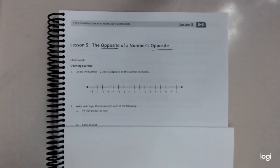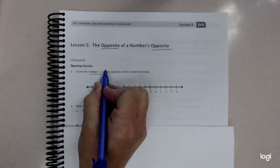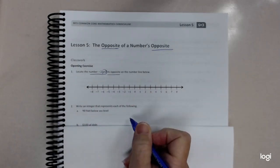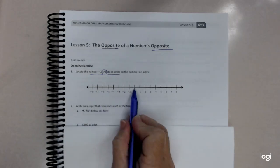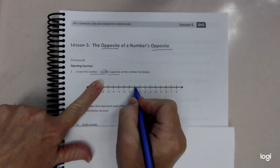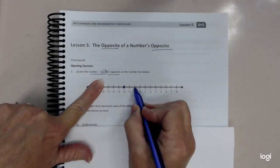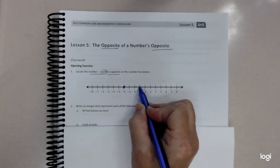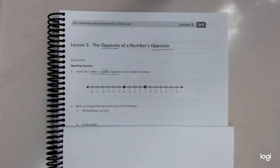Let's go ahead and look at problem number one. Number one says locate the number negative two and its opposite. So remember, in order to locate it, we have to start at zero. Negative two means we're going to go back and put our dot. Positive two means we are going to start here and go the opposite direction and put our dot.